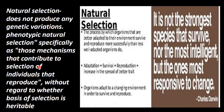Natural selection is the process by which organisms that are better adapted to their environment can survive and reproduce more successfully than less adapted organisms. Then comes adaptation. This adaptation makes them survive and makes them able to reproduce.